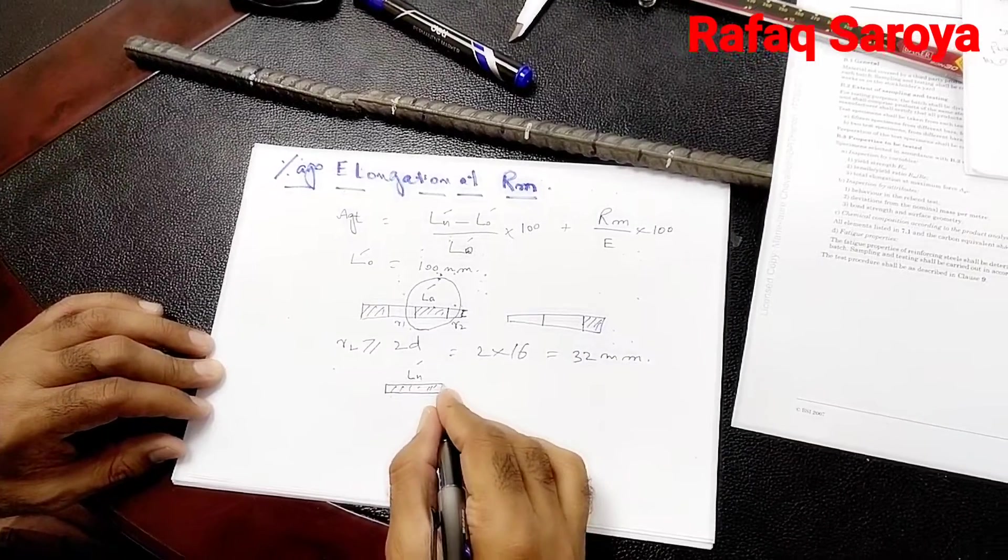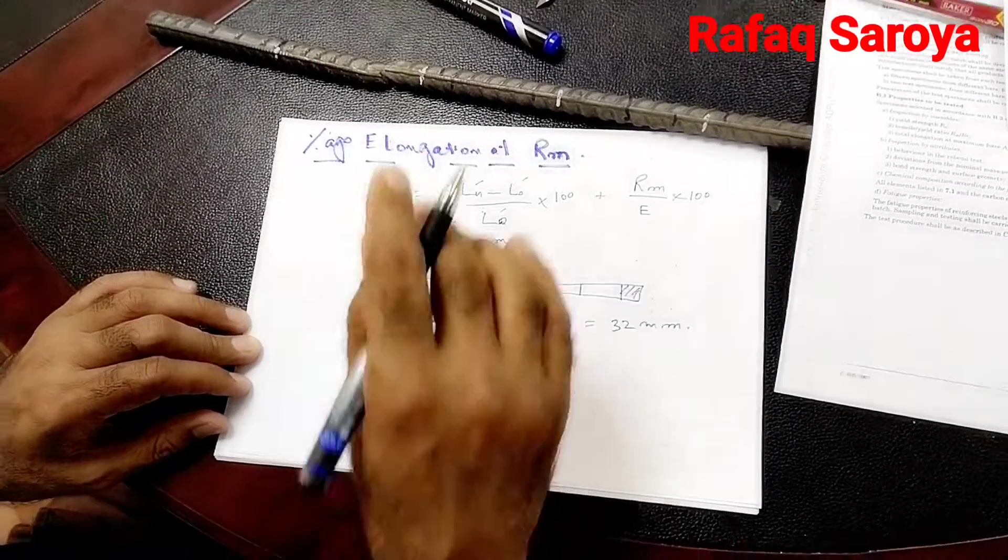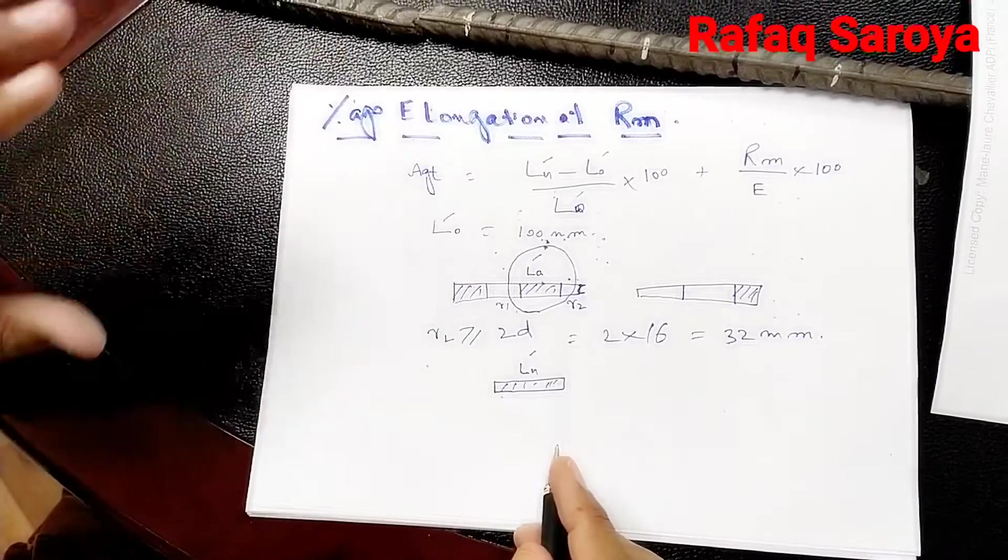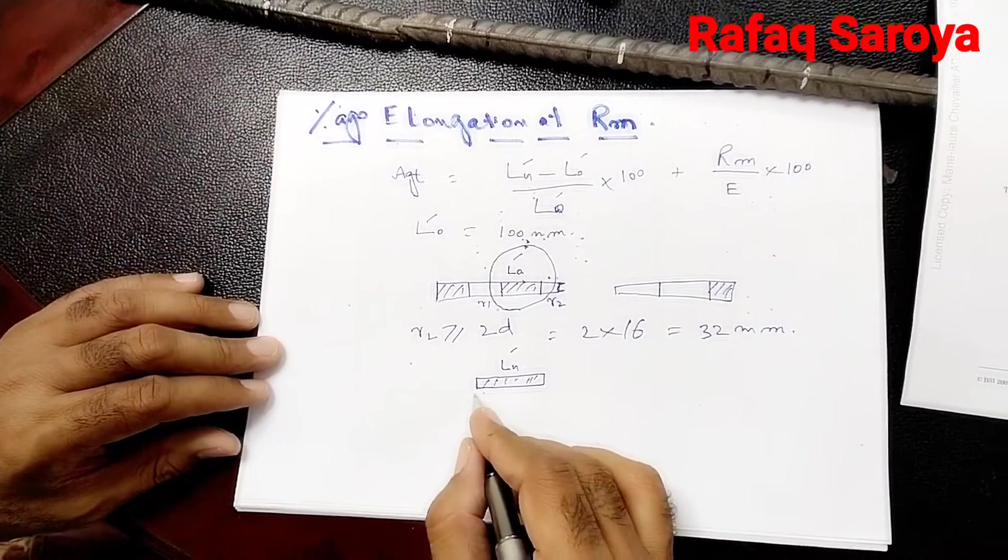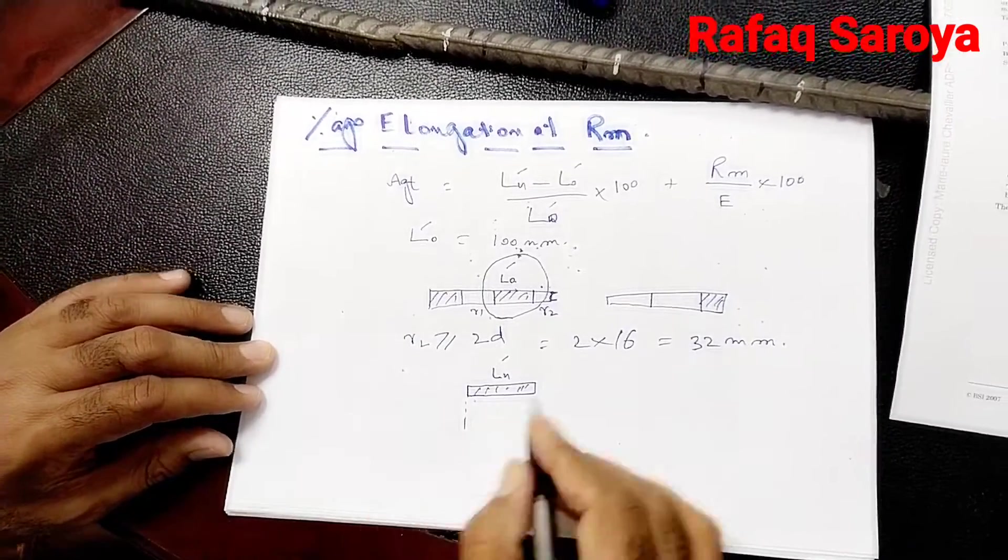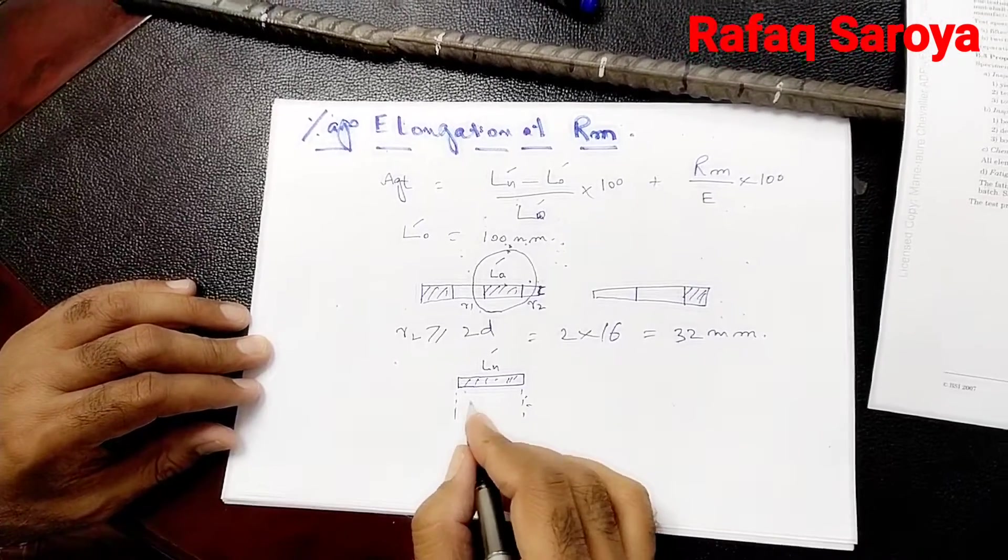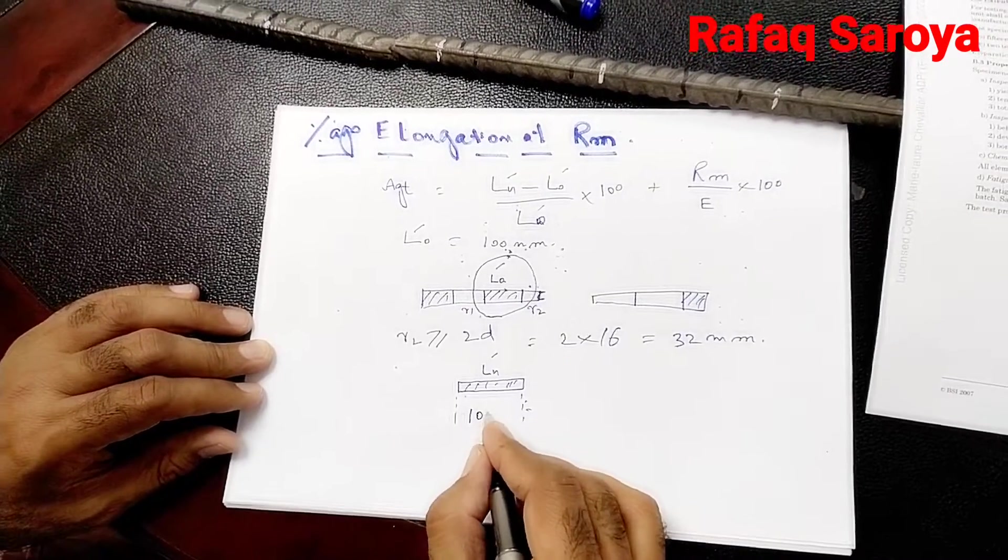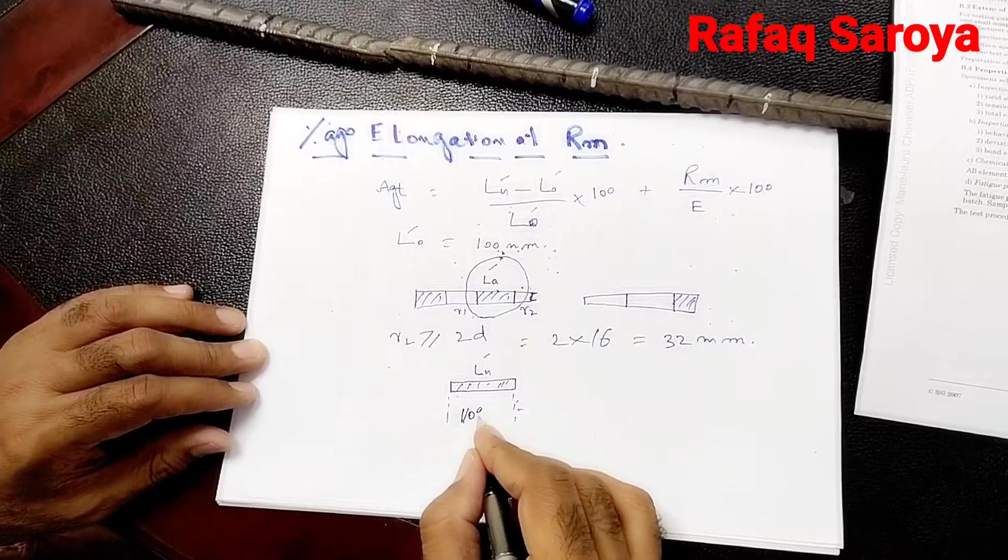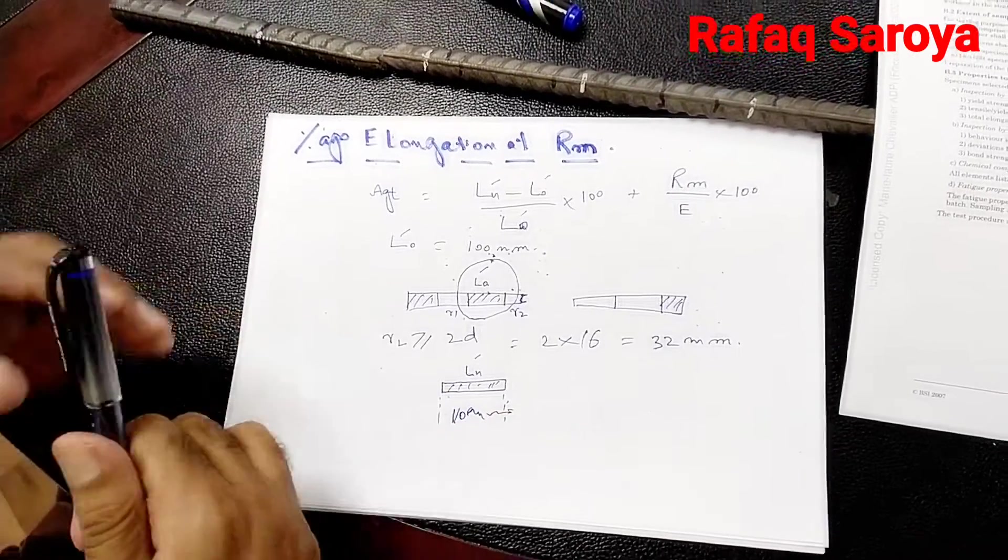And this LU' we will measure by our vernier caliper. So this distance is LU'. As I have measured over here, it is equal to 110 mm.